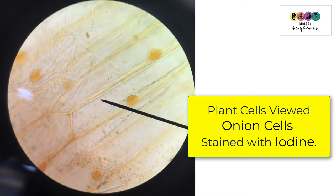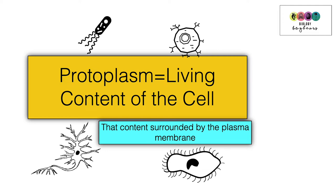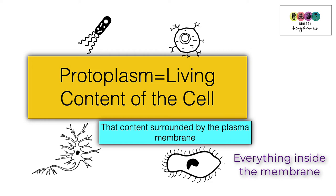We also looked at plant cells — onion cells specifically — and the stain for onion cells was iodine. What you're viewing under your light microscope is the protoplasm, which is the living content of the cell surrounded by the plasma membrane — everything inside that plasma membrane.